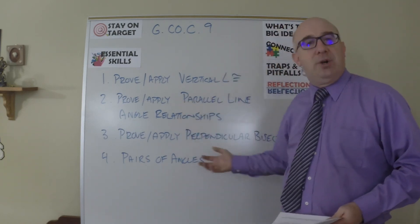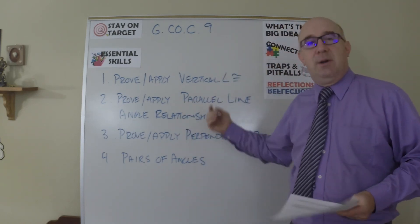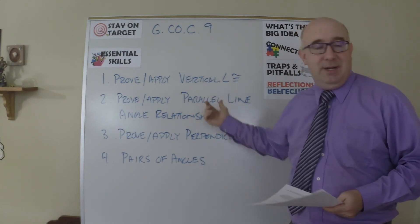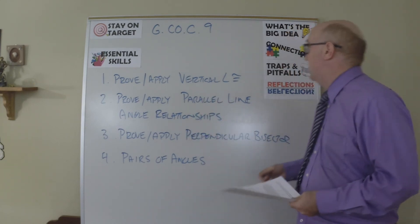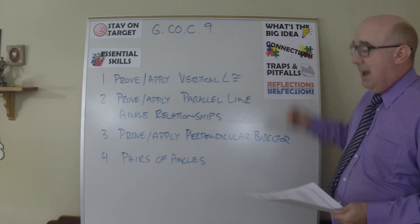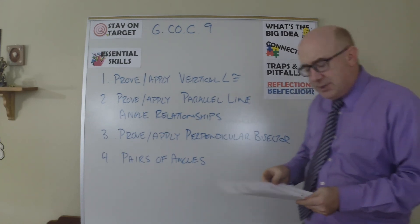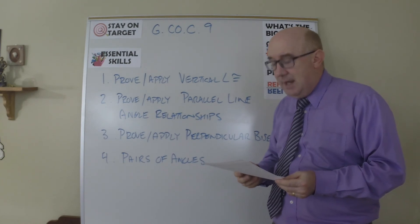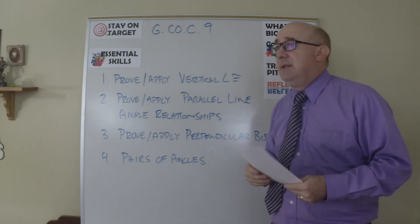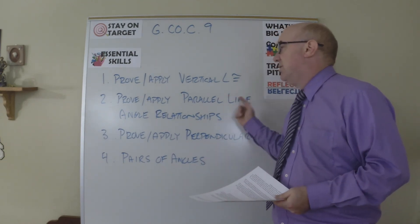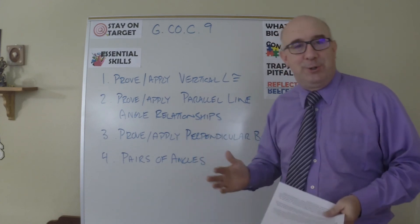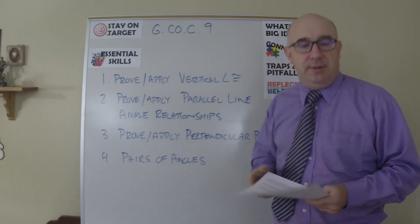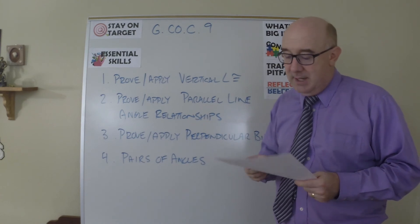Connections: this is about to be about triangles, but at this point it's about angles and lines. Traps and pitfalls: students struggle to know which angles are alternate interior, which ones are alternate exterior — that kind of stuff. They lose the names.